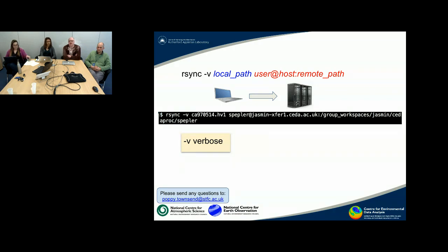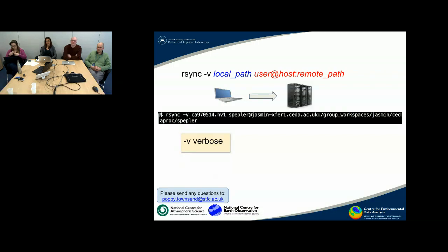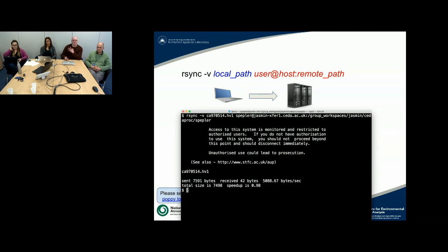The rsync destination syntax is very similar to the SSH syntax. So you put your username at the machine you're going to — in this case, jasmine-exfer1 — and then there's a colon, and then the destination directory. And if I show that in action, you'll get the login message because it's using SSH, and it tells you how much data was sent.